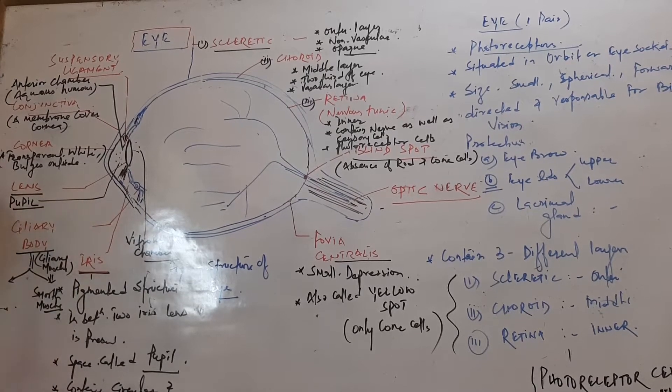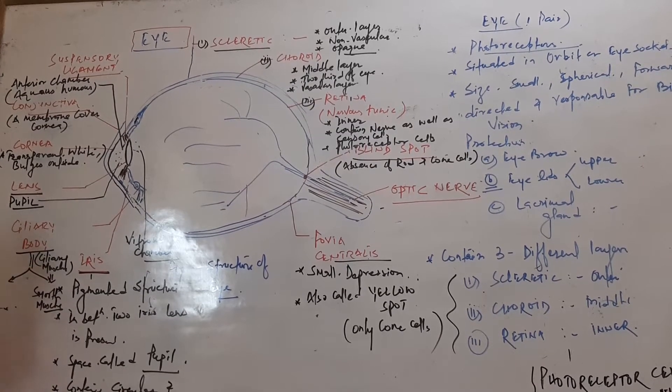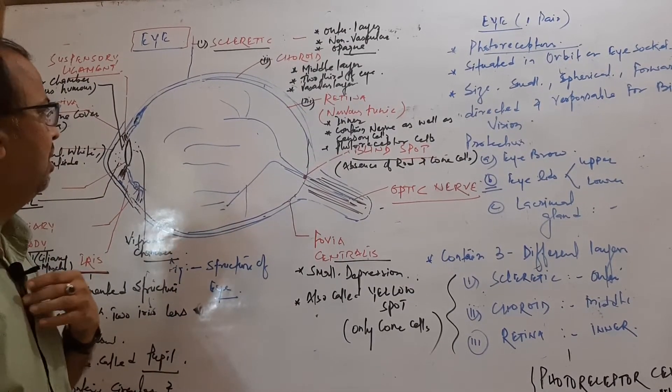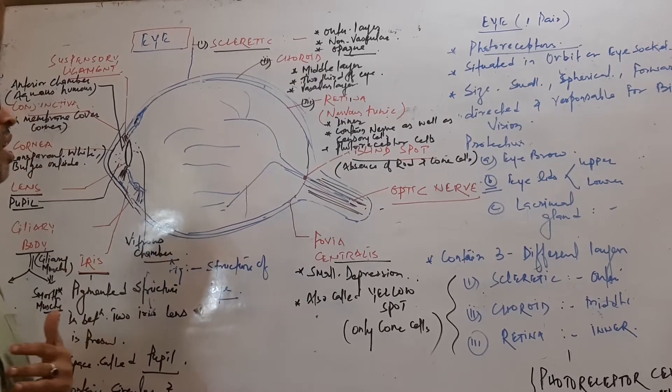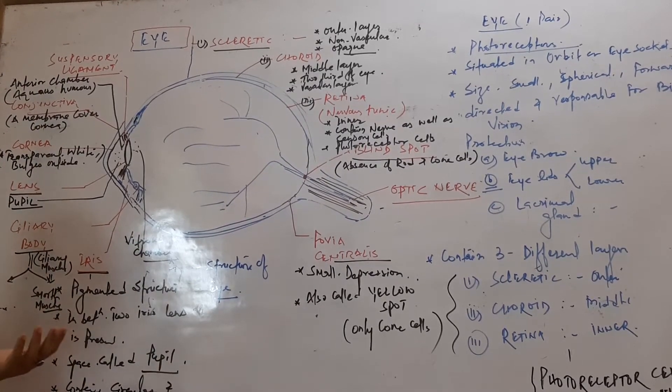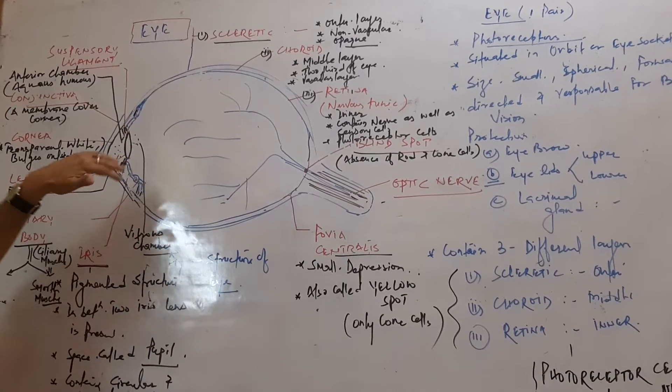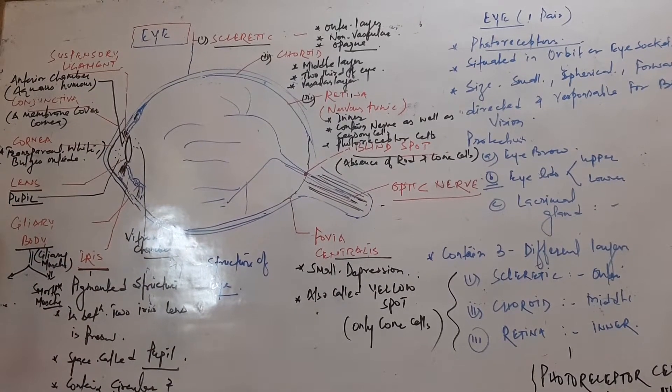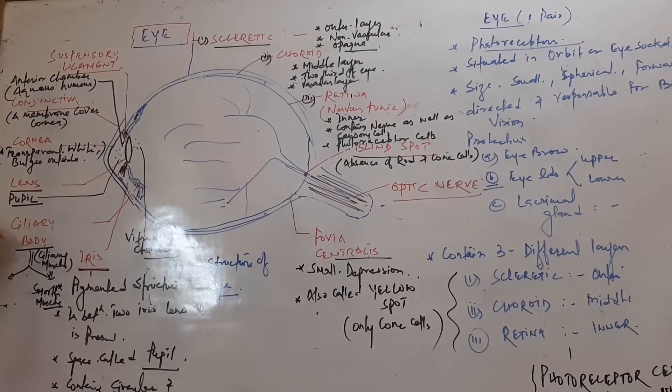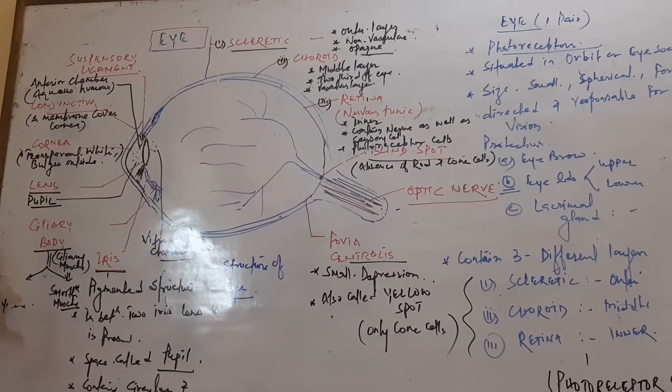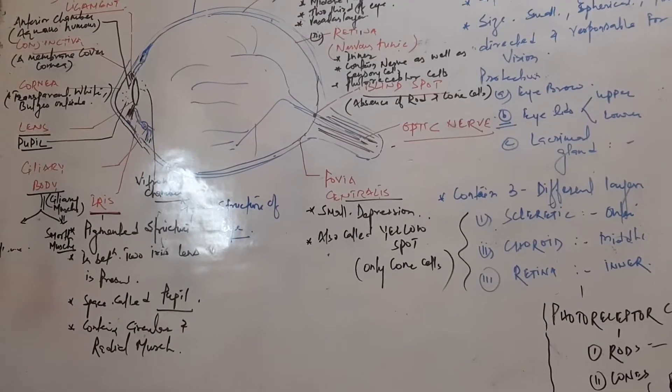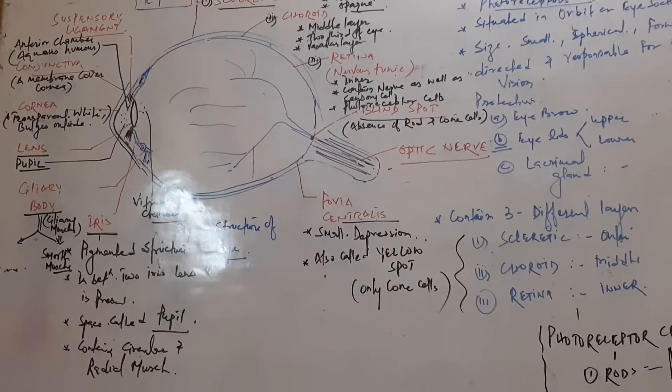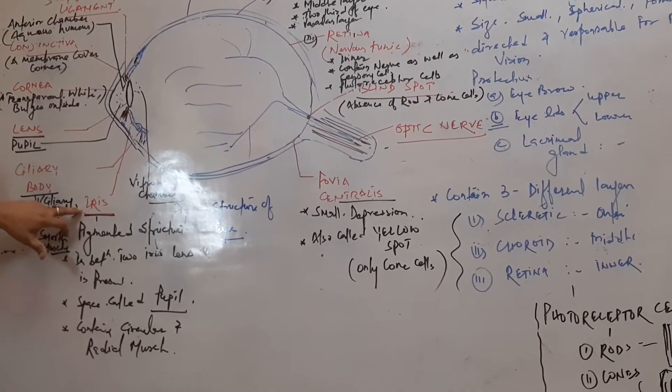Now we come to the choroid. It is the middle layer of the eye, covering two-thirds of the eye. It is a vascular layer where blood vessels and nerves are present. Anterior to the choroid, a ciliary body is present which contains ciliary muscles.